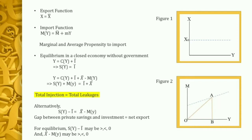Now we consider equilibrium in the closed economy without the government — or with a balanced budget where G equals T. The equilibrium condition is Y = C(Y) + Ī, where investment is exogenously given. Simplifying, we get S(Y) = Ī, meaning savings must equal investment in equilibrium.